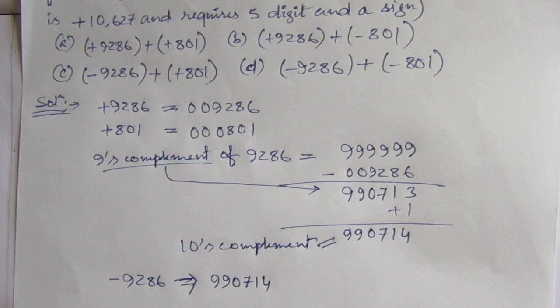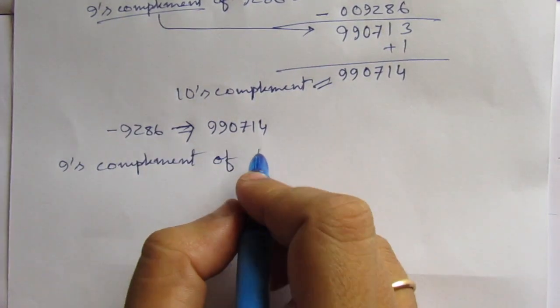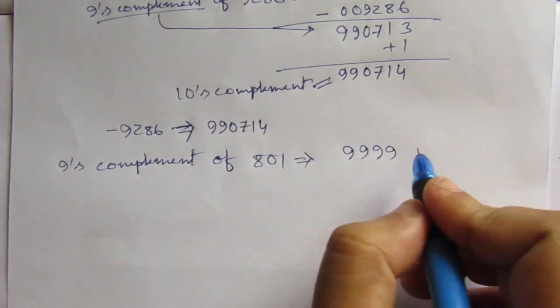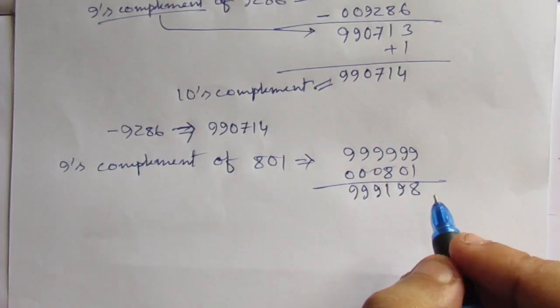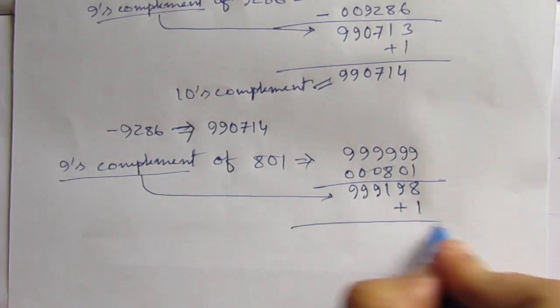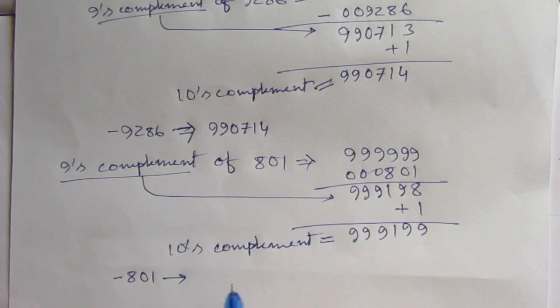And again, we have to find out for the negative minus 801. Therefore, the subtraction of 801 can be represented with addition of the 10's complement of 801. So, 10's complement will be 9, 9, 9, 1, 9, 9.